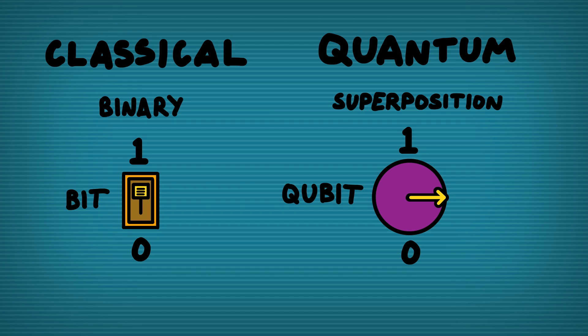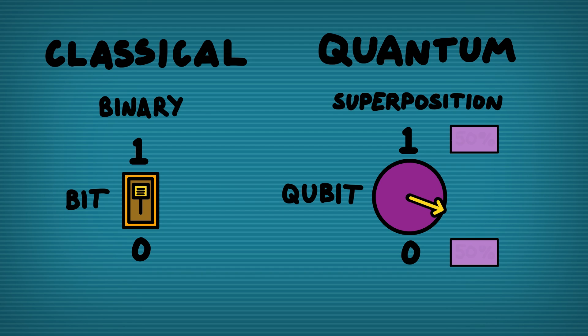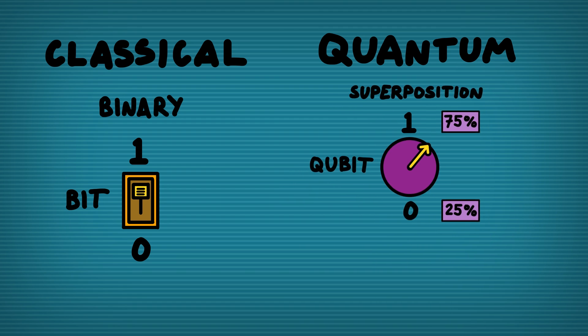When you measure a qubit the result you get is based on a probability. So if you set the superposition state to be in the middle you've got a 50% chance of getting a 0 and a 50% chance of getting a 1. But you can tune that state so you can make it more likely to get a 0 than a 1 or the other way around. That's the first phenomenon of quantum physics that quantum computers take advantage of.